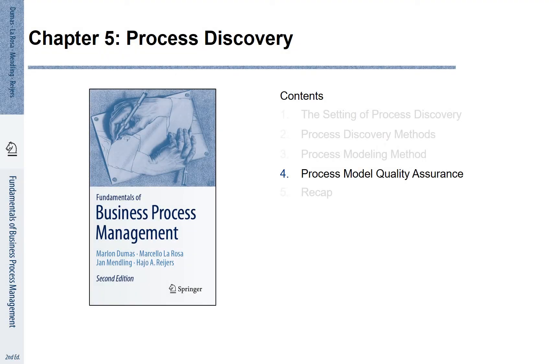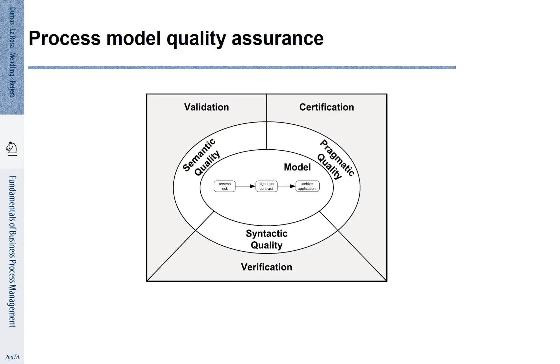Chapter 5 Section 4: Process Model Quality Assurance. We need to make sure that our process models are of good quality. We can distinguish three different quality aspects.